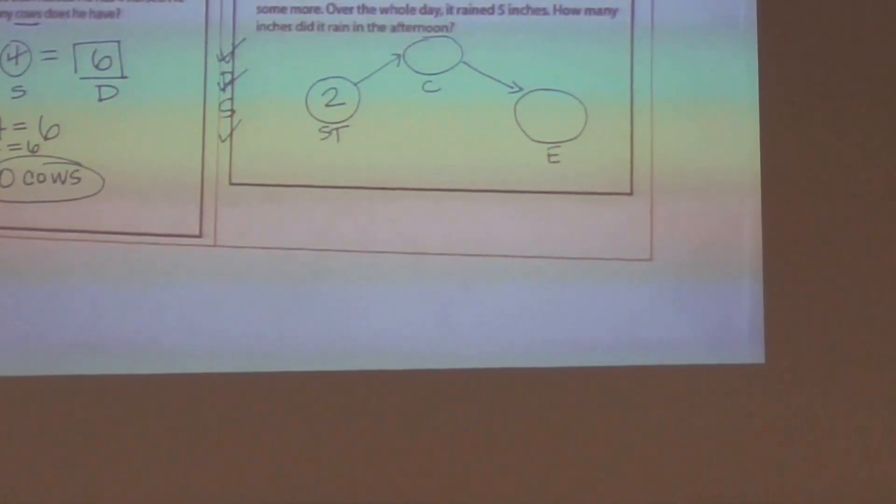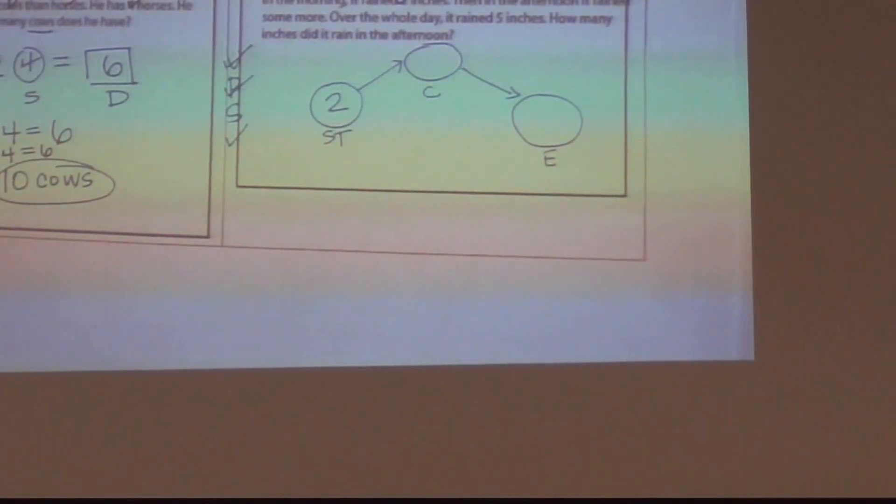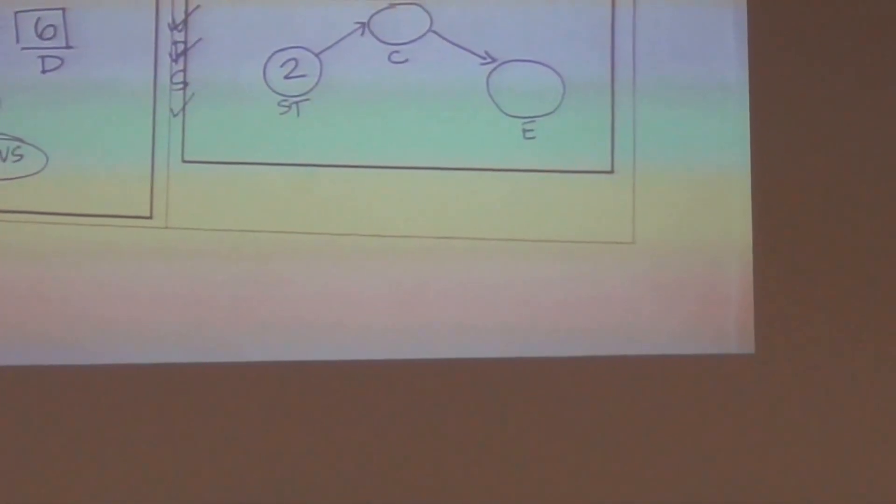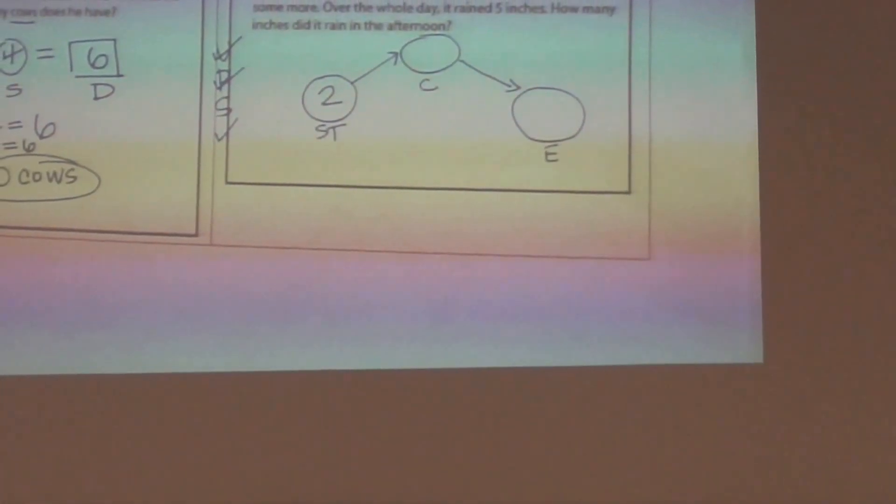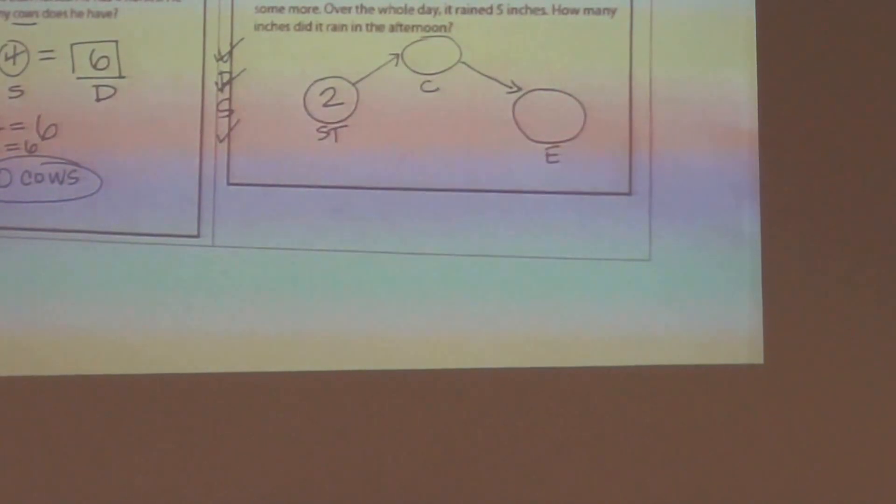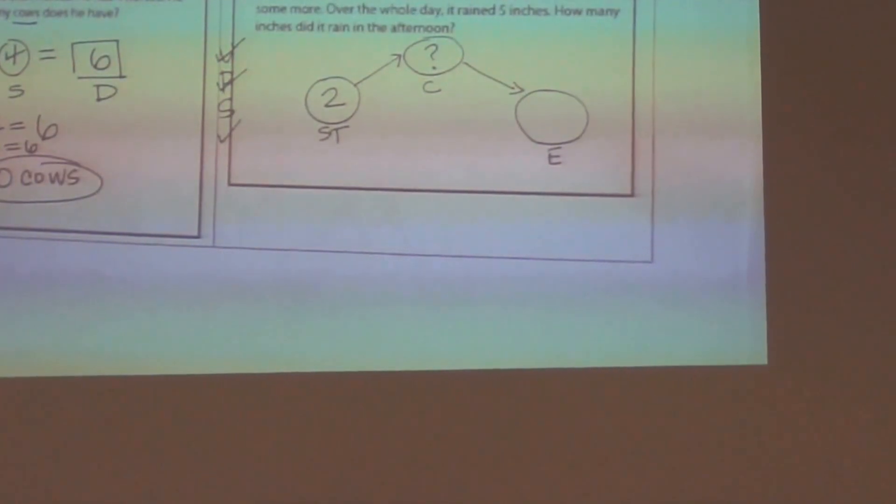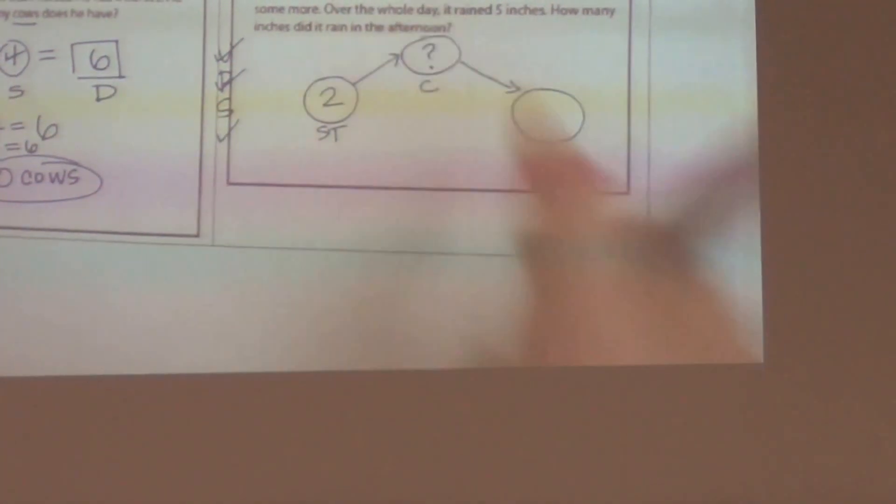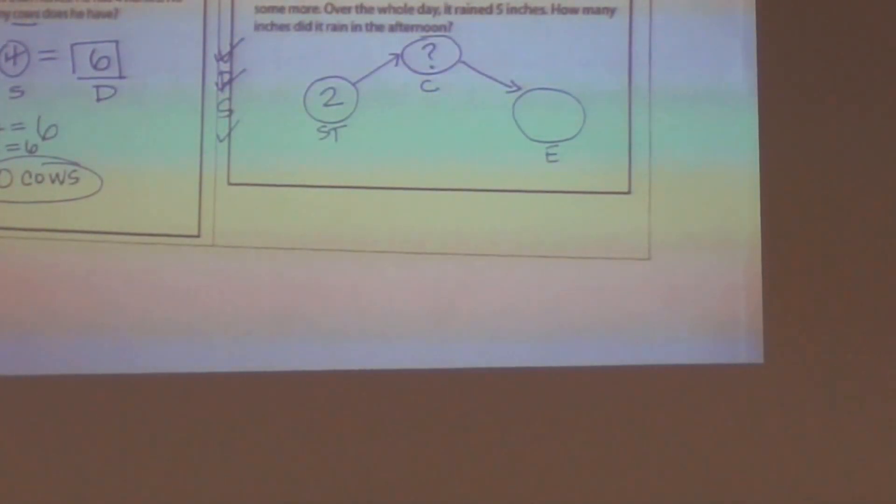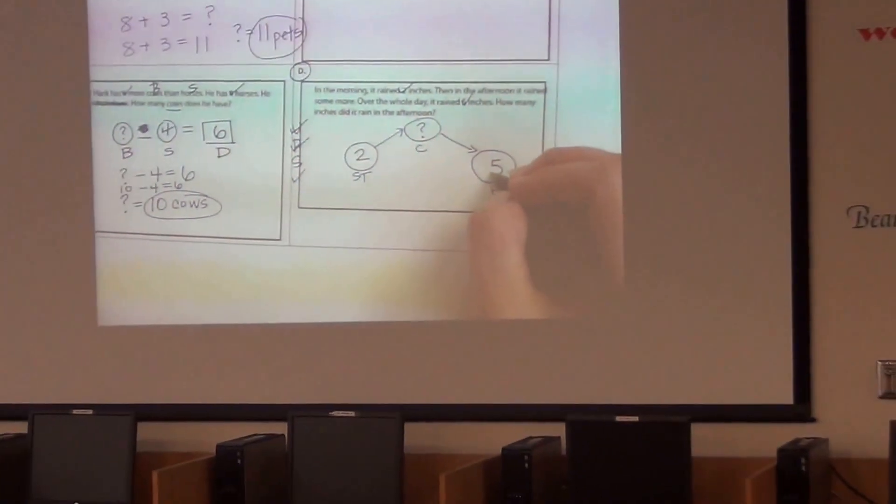Now the story continues: Then in the afternoon it rained some more. Do we know how much it rained? No. But that's a change in the rain. So how should I mark that change circle if I don't know it? Question mark. I don't know the change in the rain—that's what we're going to figure out. Then after the whole day it rained five inches. So how much did it rain by the end of the day? Five. We're going to check off five and put that in the E box.